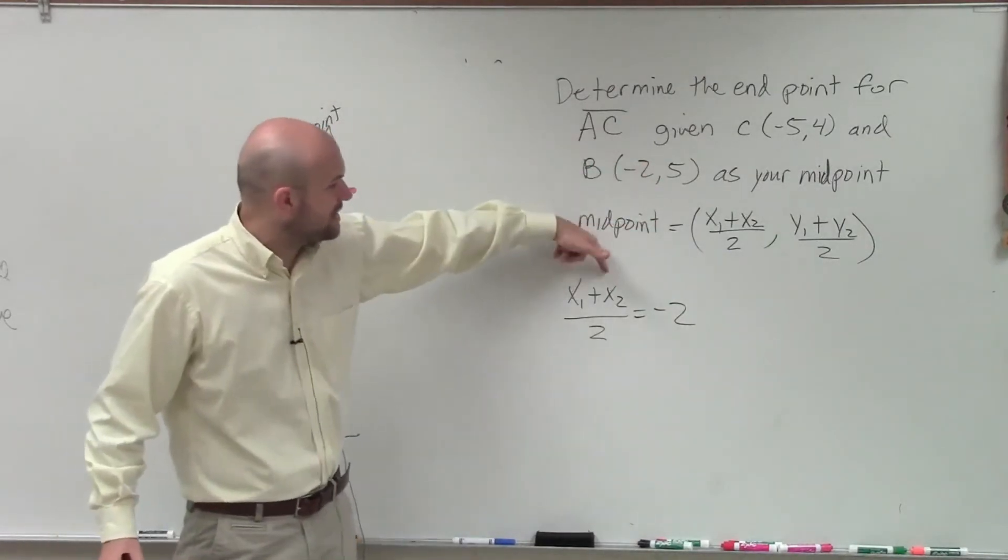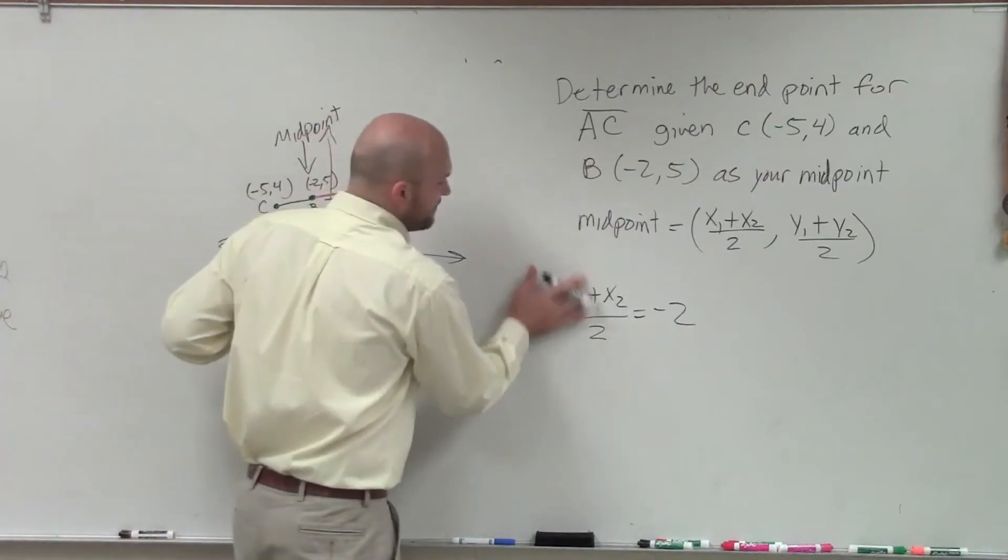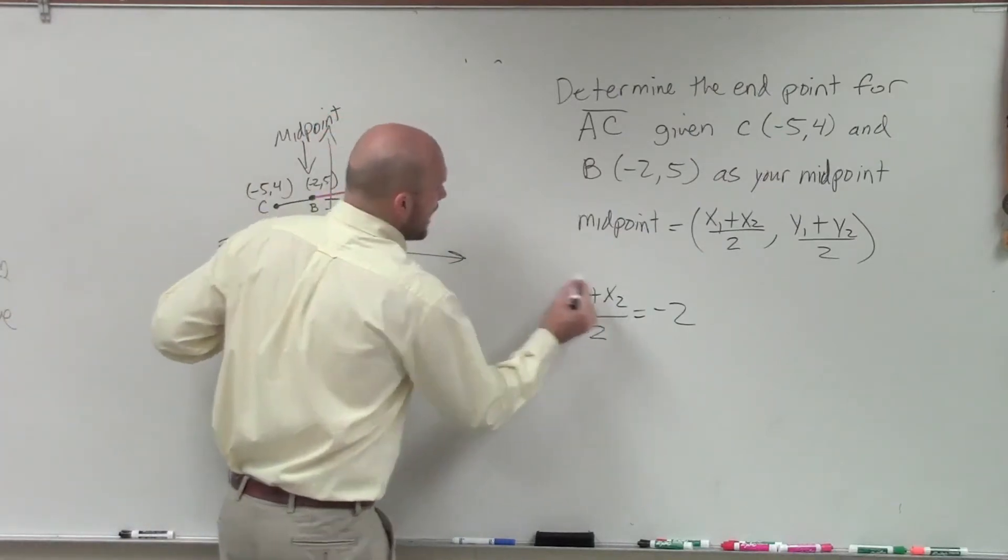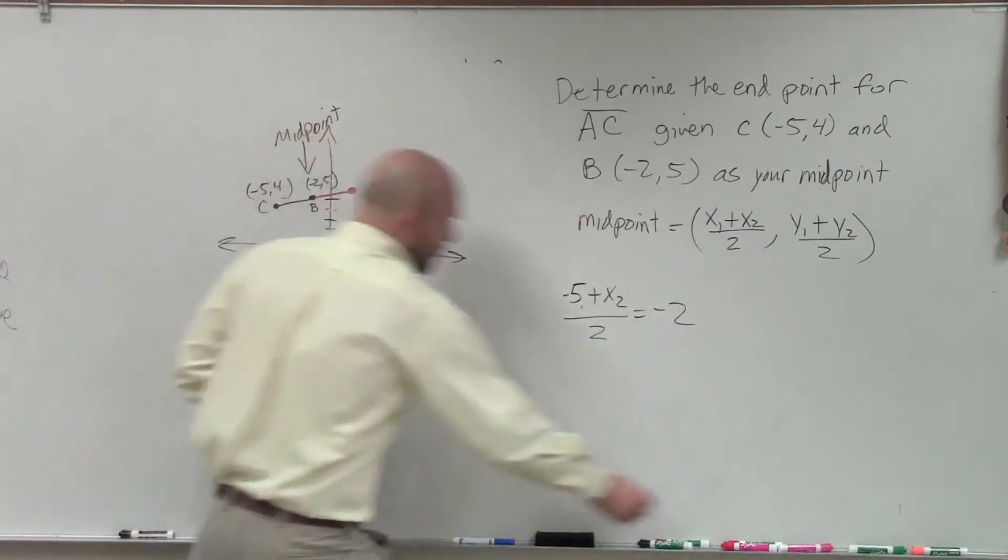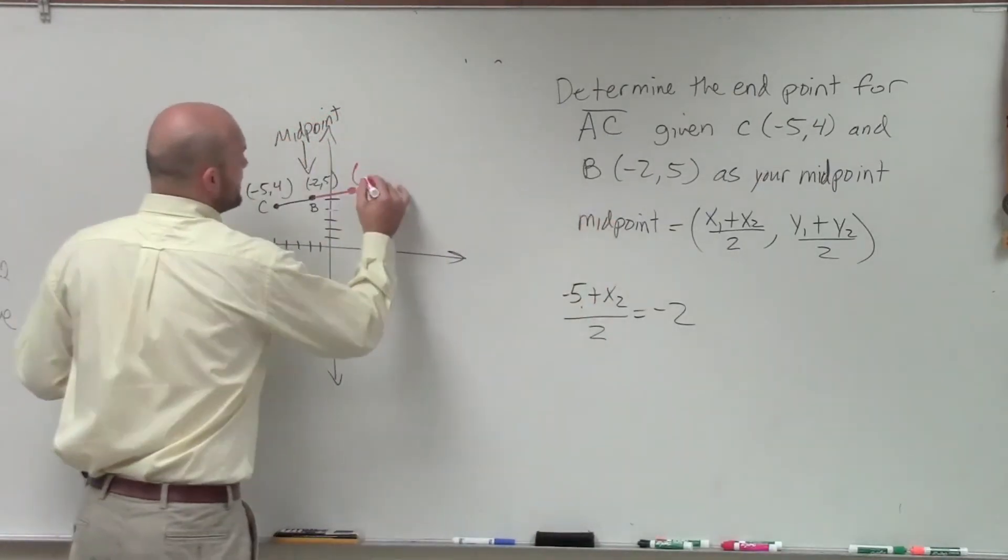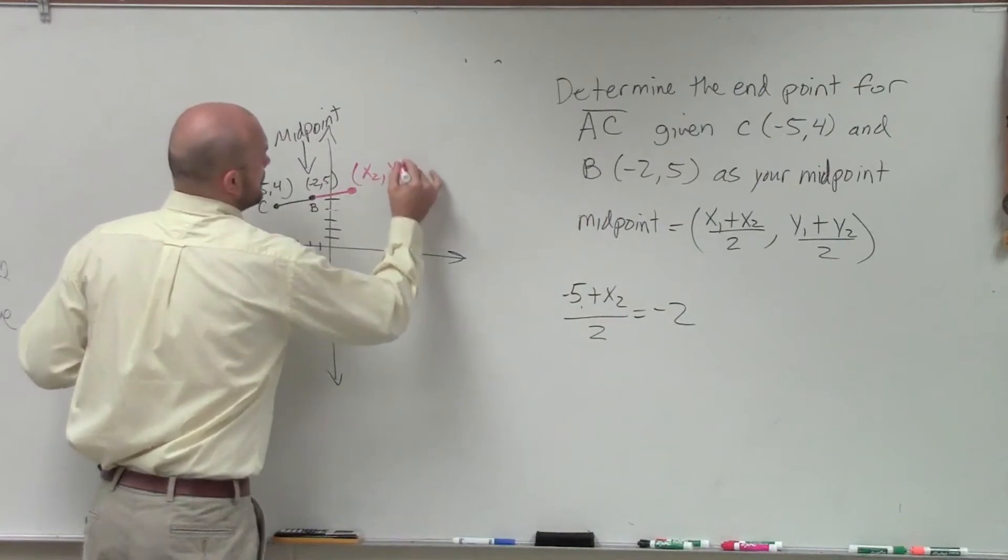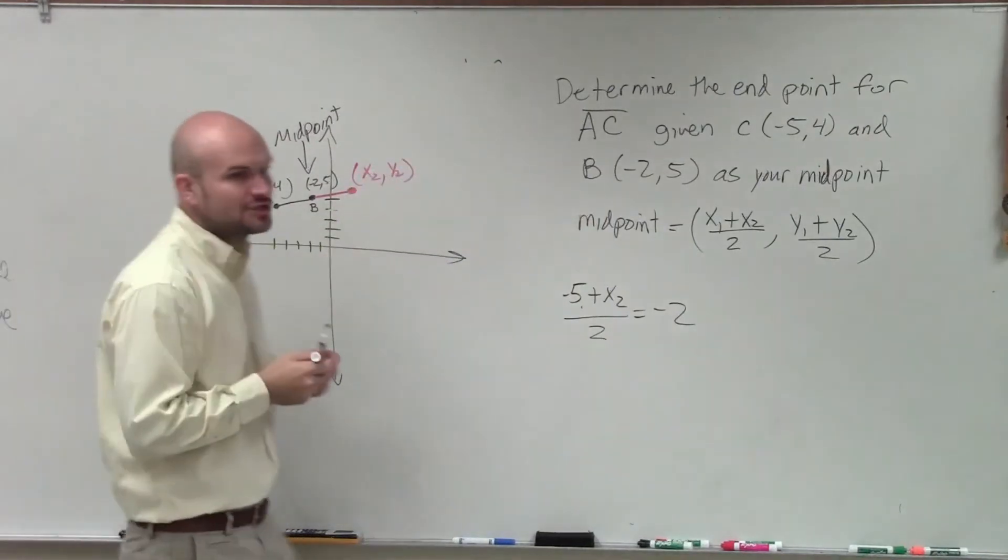So then I look and I say, what two points were I given? Well, the only x point I was given was negative 5. I just don't know what x2 is. I don't know what this point is. And that's what I'm trying to determine. I don't know what this point is, so that's what I'm trying to determine.